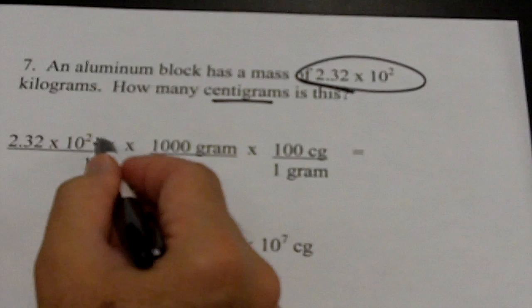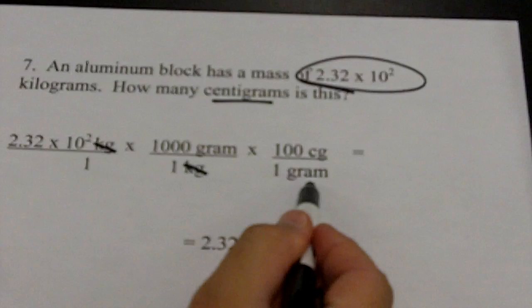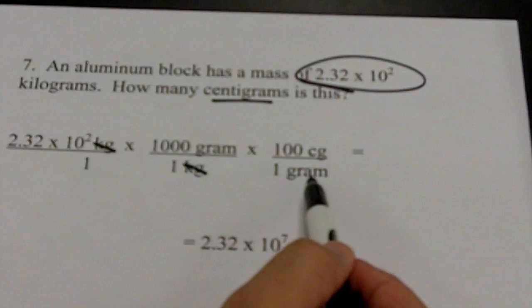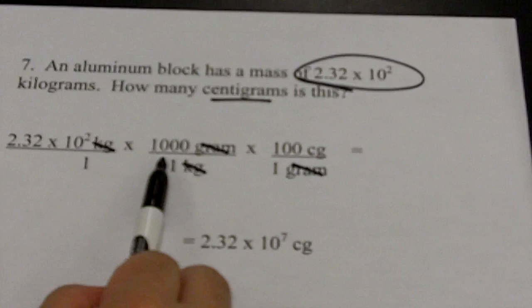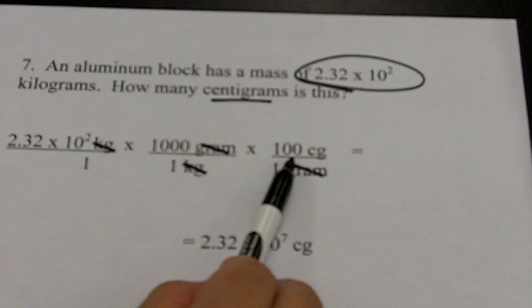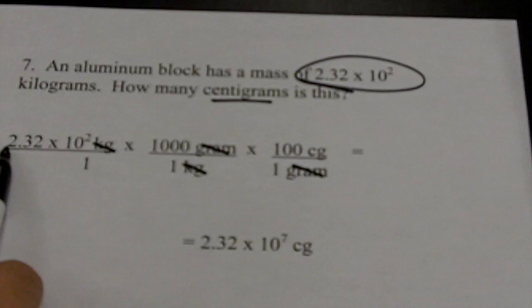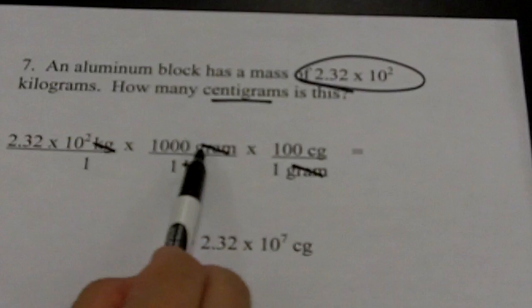Cancel kilograms with kilograms. Do I get the calculator out? No — I'm looking for centigrams, so I have to keep going. Whatever unit is here goes there: grams in the denominator. What am I looking for? Centigrams. Do I know how many centigrams there are in a gram? Yes — a hundred centigrams in a gram. Grams cancel with grams, leaving centigrams. Before reaching for the calculator: 1000 is 10³ and 100 is 10². Multiplying 10³ times 10²: add exponents to get 10⁵. These two conversion factors combined give 10⁵. My answer is 2.32 times 10² times 10⁵; adding exponents: 2 + 5 = 7.